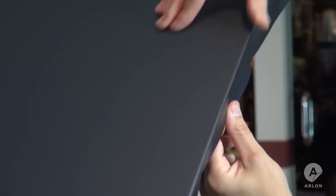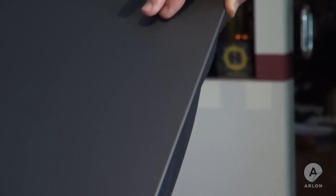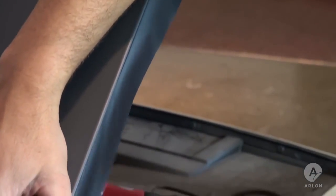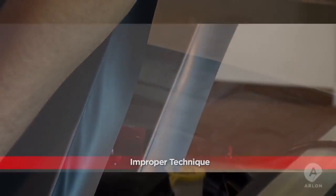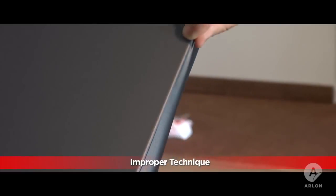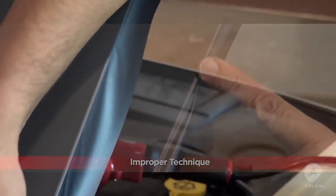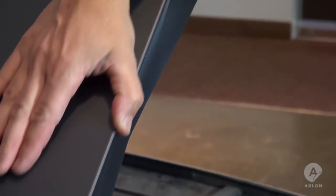Start by slowly rolling the vinyl around the edges of the hood about an eighth of an inch at a time. It is easy to make the mistake of trying to wrap the edge in one step. It is important to work the vinyl around the edges slowly so that you don't make creases.